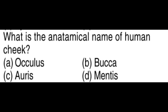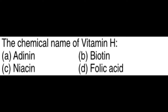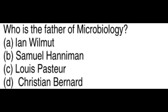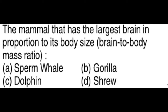What is the anatomical name of the human cheek? Buccal. The chemical name of vitamin H is biotin. Who is the father of microbiology? Louis Pasteur. The mammal that has the largest brain in proportion to its body size is the shrew.